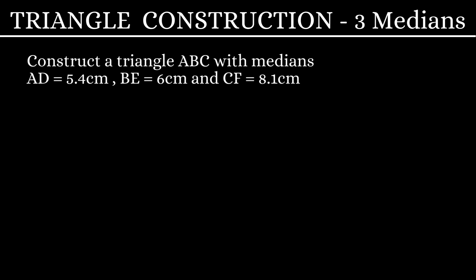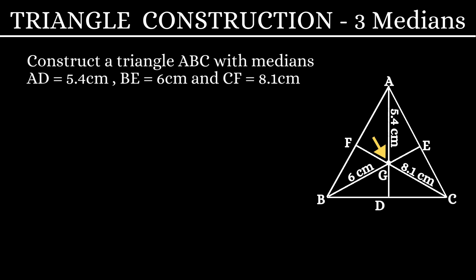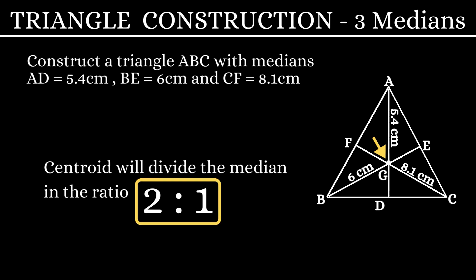Now let us give a quick rough sketch. Let's say this is the triangle ABC with the medians AD, BE, and CF with the given dimensions. These three medians intersect at the centroid G. We know that the centroid divides the median in the ratio 2 is to 1. Using this, let's calculate some dimensions.